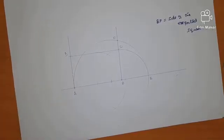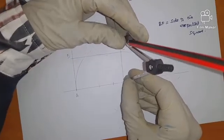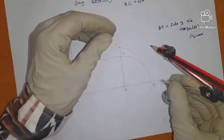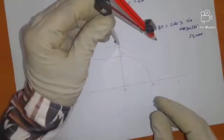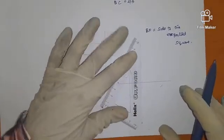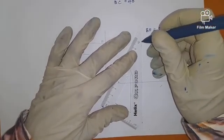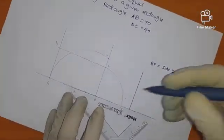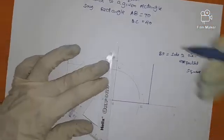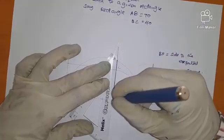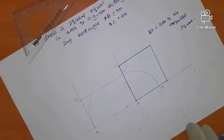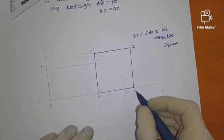We now complete the square by taking the distance BF and bringing it back to our base. We stand here and make an arc, then come to the other side and make an arc. That gives us our square. We join the sides, and our square becomes BFGH.